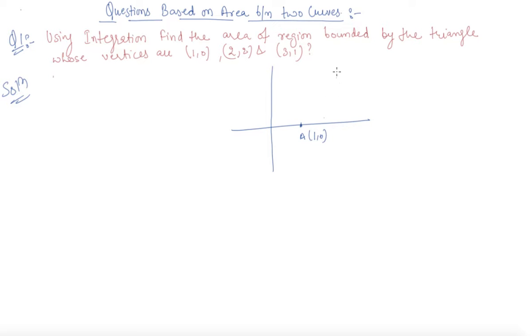So this is 1, 0, 2, 2 will somewhat lie here, let us say it is B and 3, 1 will be here, let us say it is C. So, this is A, B, C and to find out the area of the region, area of triangle ABC is,